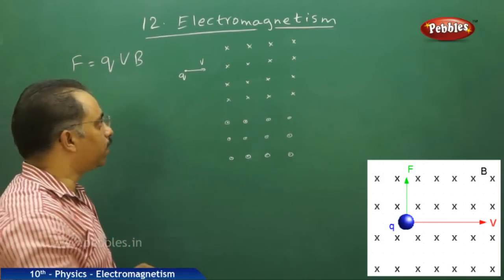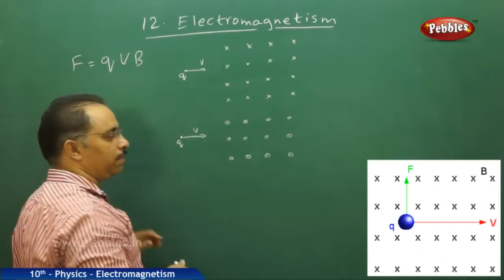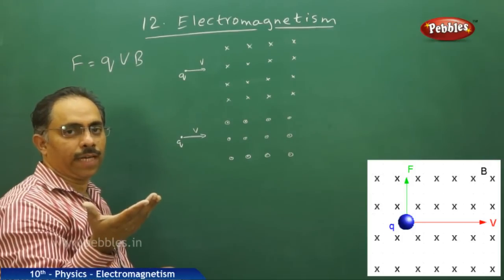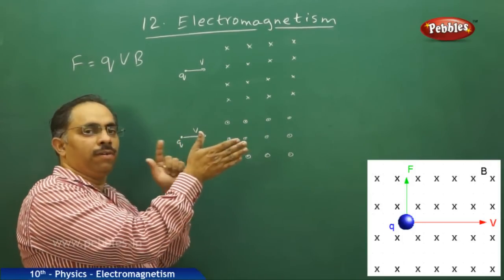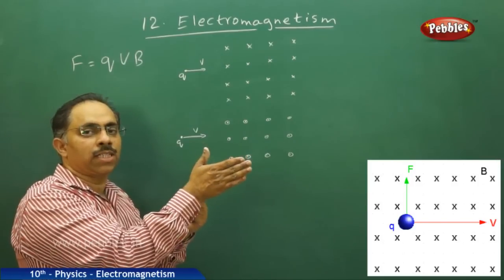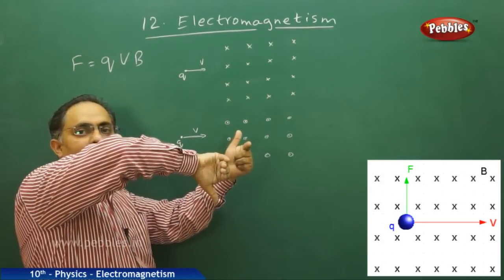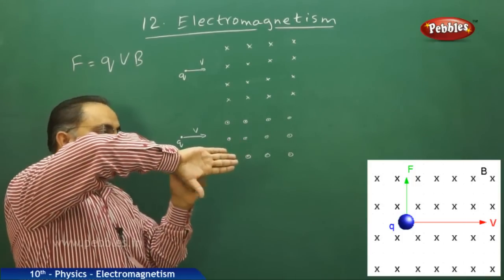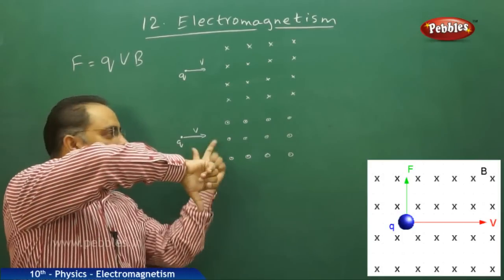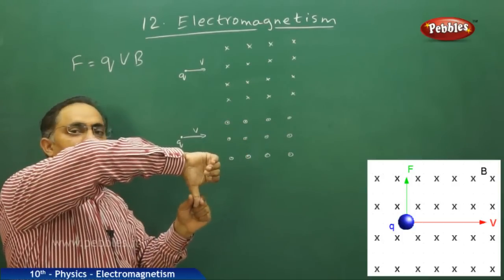Now assume charge q is going in the same direction with velocity v, and I want to know the direction of the force using the right-hand rule. I point my right-hand fingers in the direction of velocity and curl them in the direction of the magnetic field — which is coming out of the board. I tilt my hand so fingers point in the velocity direction and curl them outward.